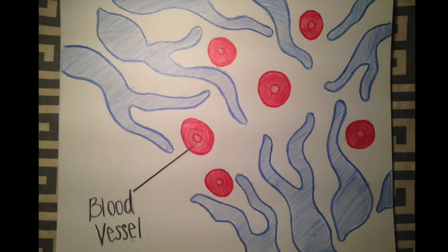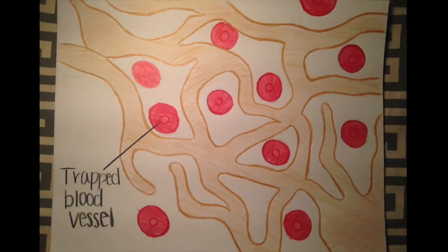At this point, blood vessels begin to migrate into the area between spicules. The spicules continue to grow outwards from the ossification center and eventually touch each other, trapping the blood vessels within the developing bone. This is important for the development of mature bones because it will allow the bone to be vascular.